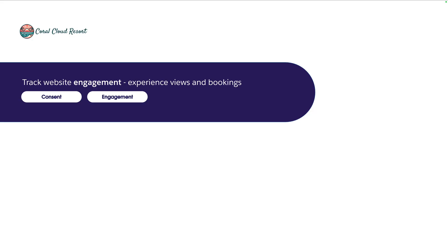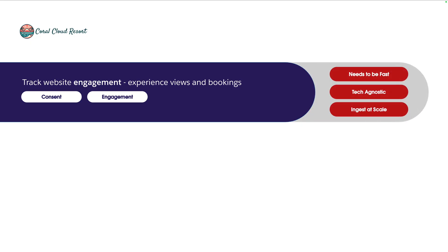The first new goal that Coral Cloud Resorts has is the ability to track website engagement — things like what people are clicking on, whether they're clicking on spa days or adventure weekends, and even the bookings they're making. This is going to have to comply with any regulations around consent, it's going to need to be fast and near real-time, technology agnostic because Coral Cloud already have a website, and it needs to be able to ingest data at scale because there's going to be a lot of activity.